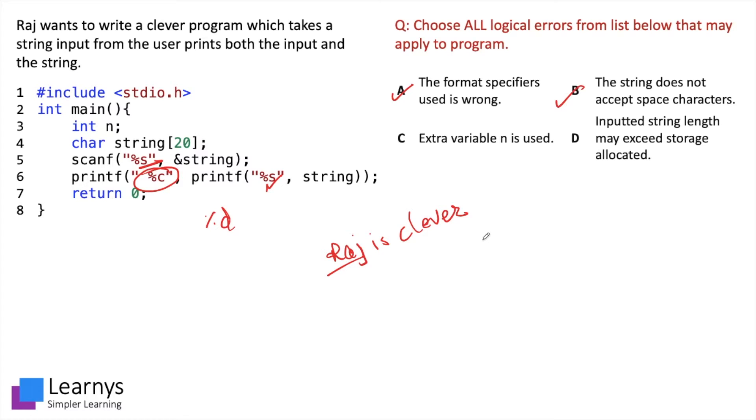So yes, since the string does not accept all characters, it can be a logical error given the right input. Okay, we are using an extra variable n which has not been used anywhere in the entire program. Yes this is definitely the case, but this is not a logical error. By using an extra variable n we are not changing the logic used in the program, so C is not the right answer.